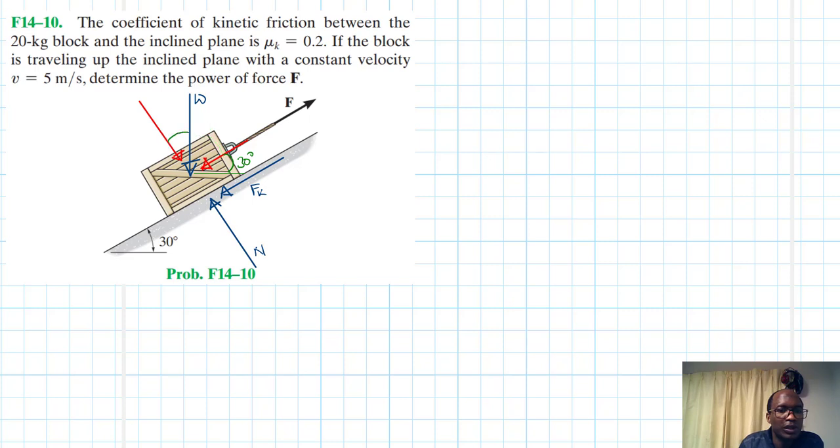So this one here is 30. If that is the case, therefore this just becomes W cos 30.